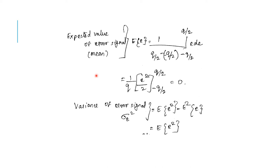For a uniformly distributed random variable in the interval X1 and X2, we calculate the mean and the variance. The expected mean value of the error signal E of E is equal to 1 divided by (Q/2 minus (−Q/2)), integrated from minus Q by 2 to Q by 2 of E dE. Integrating this, we get mean equal to 0.